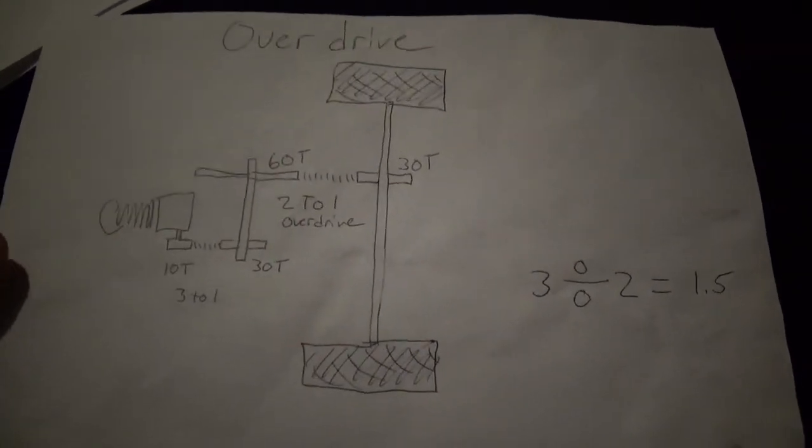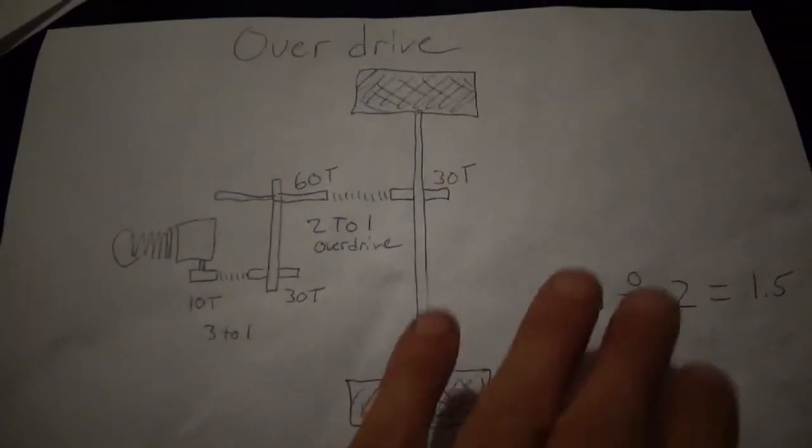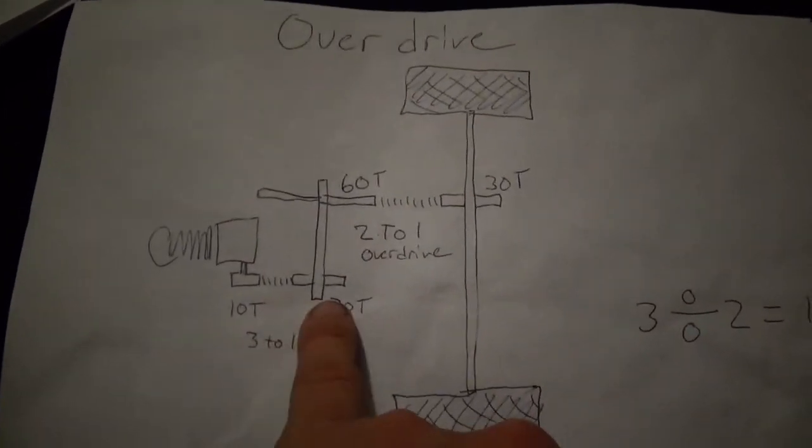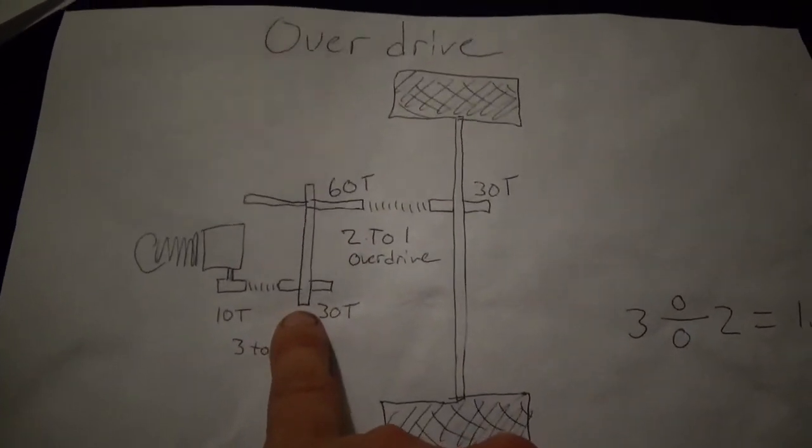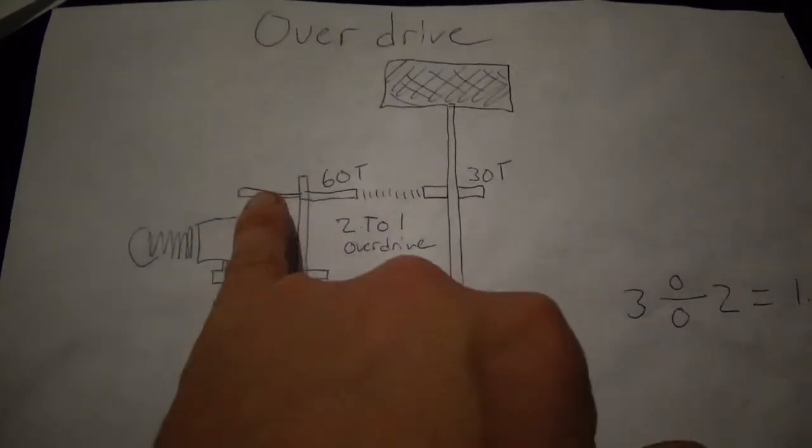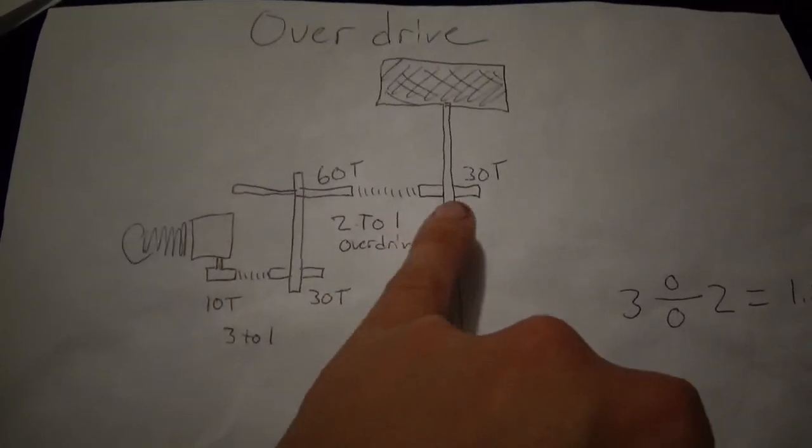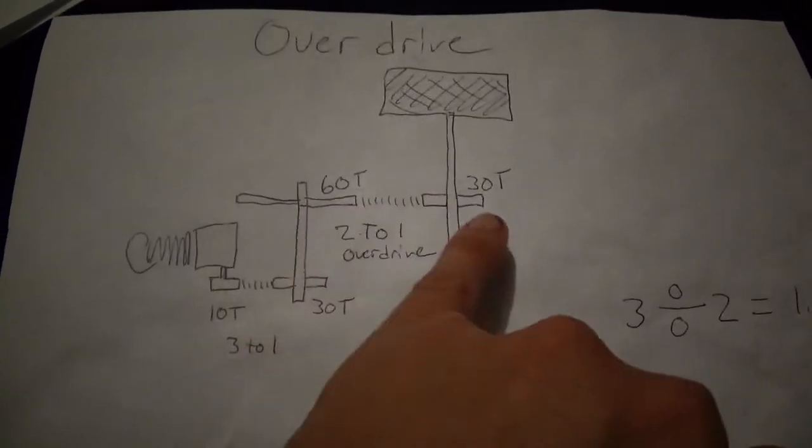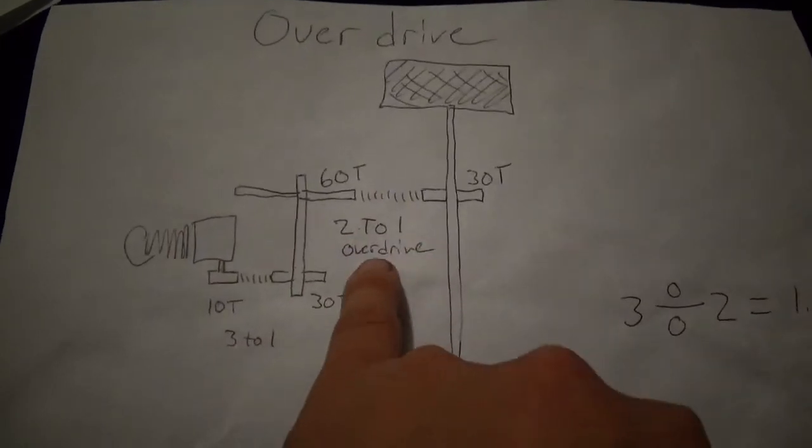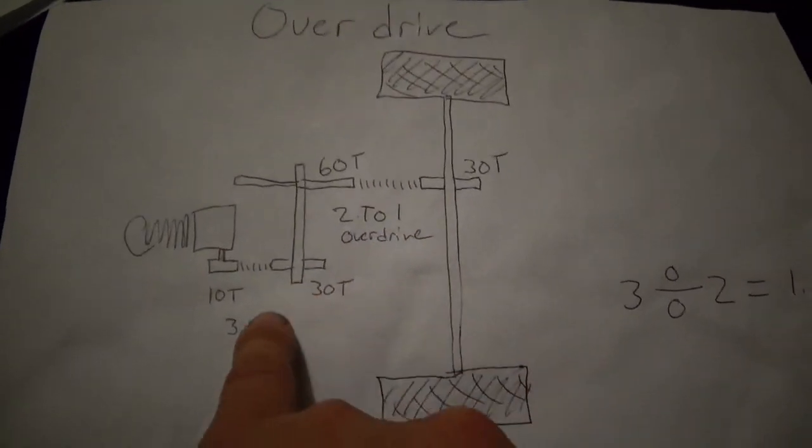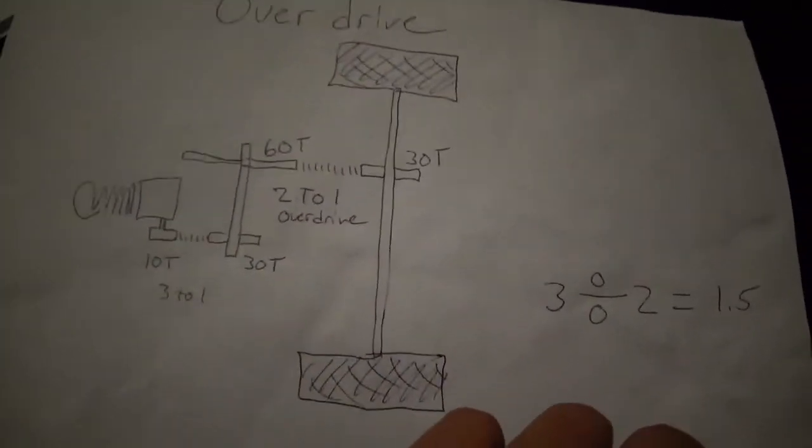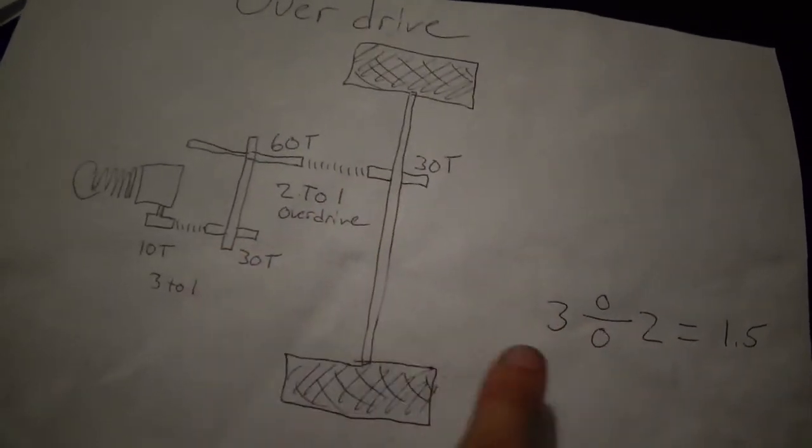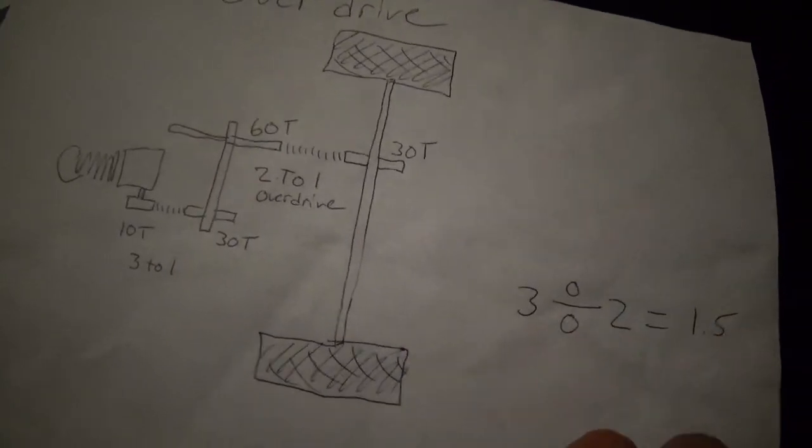Over-driving. We have a 10 tooth and a 30 tooth, so that's a three-to-one ratio. Then it goes up to a 60 tooth and then back down to a 30 tooth. So this 60 and 30 is a two-to-one ratio, but it's over-driven. This one's under-driven.